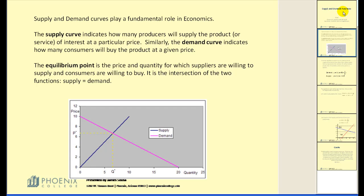Supply and demand curves play a fundamental role in economics. The supply curve indicates how many producers will supply the product at a particular price. The demand curve indicates how many consumers will buy the product at a given price.